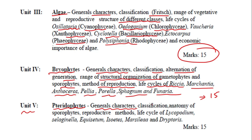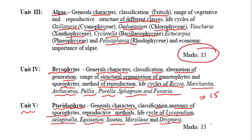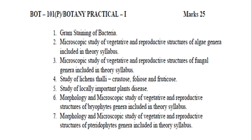Unit 5 covers pteridophytes: general characters of pteridophytes, classification, anatomy of sporophytes, reproductive methods, and life cycles of Pteridium, Selaginella, Equisetum, Isoetes, Marsilea, and Dryopteris. This unit will also carry 15 marks. Practical will carry 25 marks.